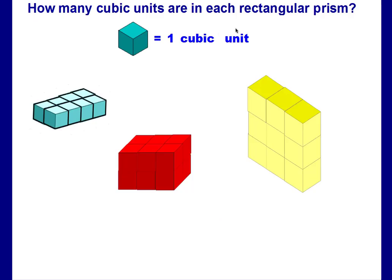So how many cubic units are in each rectangular prism? Let's take a look at the first one. If you'll look, there's one, two, three, four, and then you have four behind it, so there are a total of eight. There's only one level, so it's just eight.